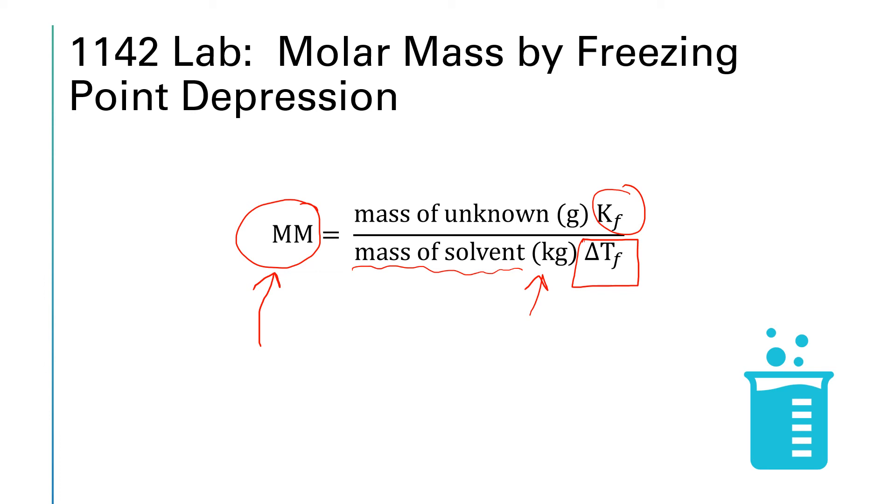That's kind of nice because in Gen Chem 1, we always approach molar mass as being something that you get off the periodic table. But if you can do something like freezing point depression and calculate the molar mass of your substance, that is one way that you can actually identify an unknown.